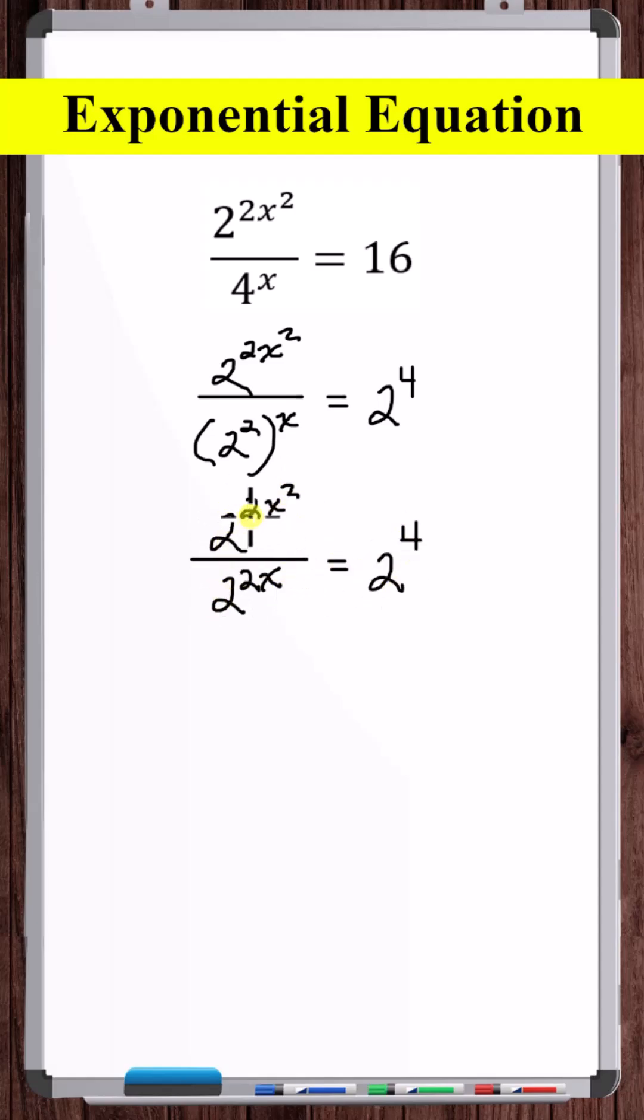Since these bases are the same, we can do this division and get 2 to the 2x squared minus 2x.